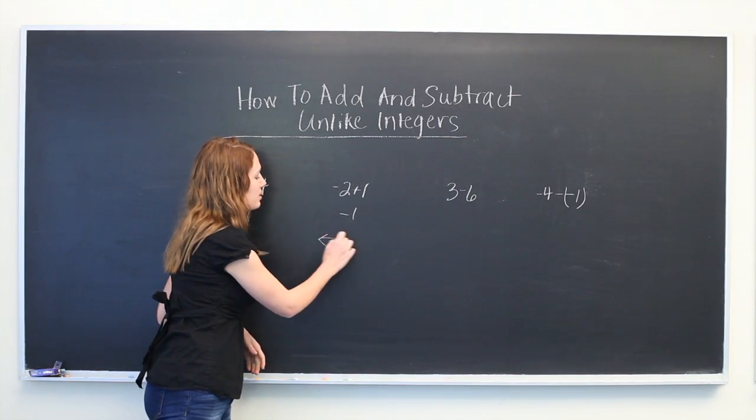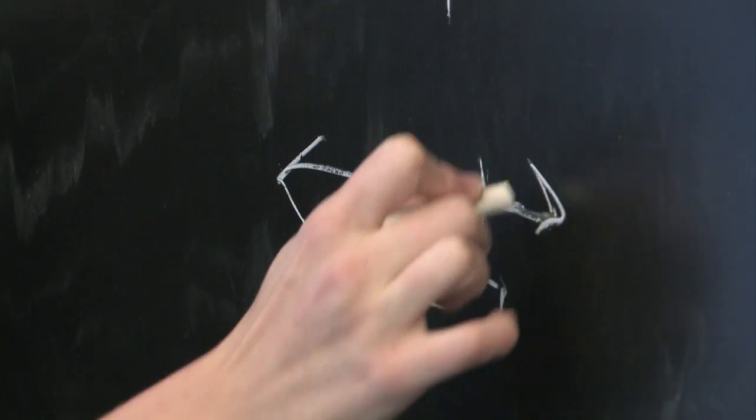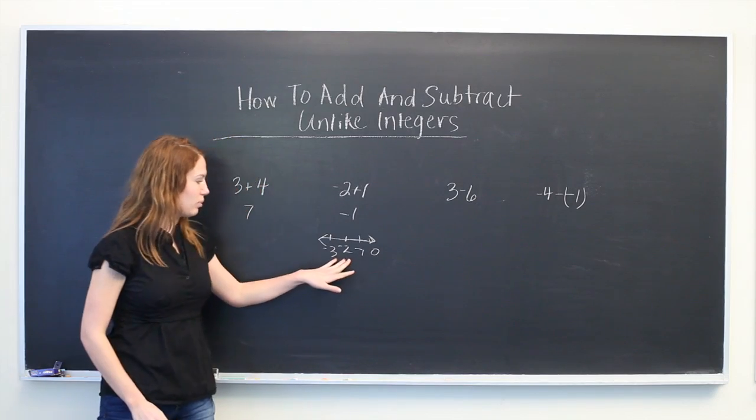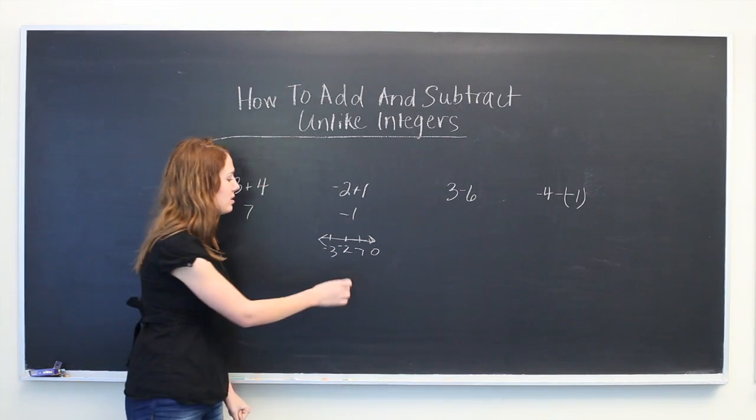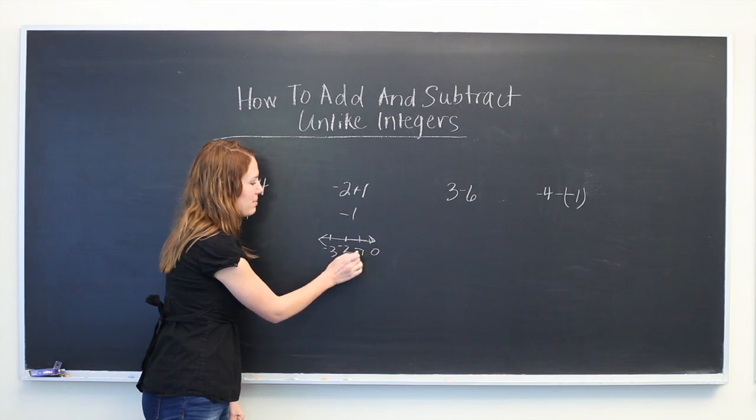Picture a number line where you're at -2 and fill in the values around it. When you add, you move to the right, so you're here and you add 1, and you end up at -1.